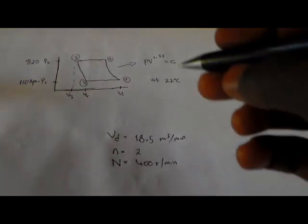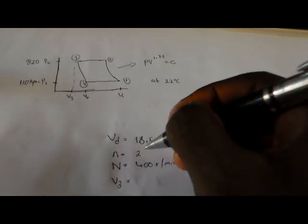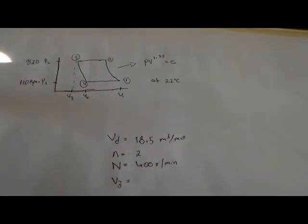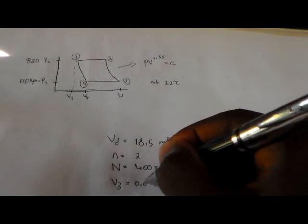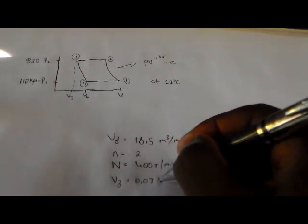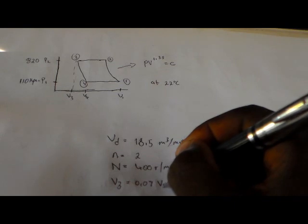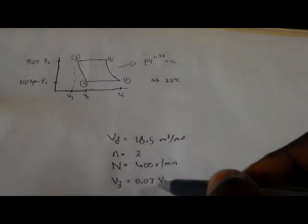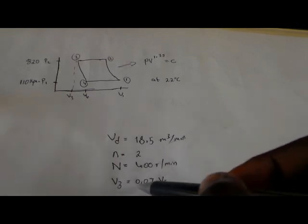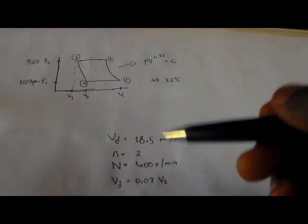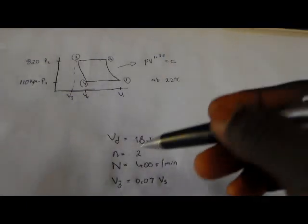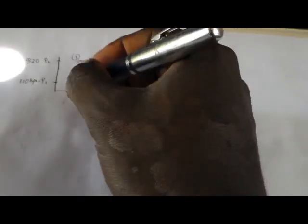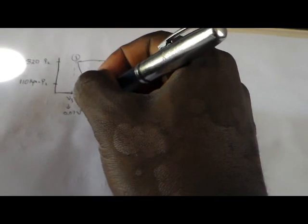The clearance volume, which is volume V3, is 7% of the stroke volume. That means 7 divided by 100, giving us 0.07 times the swept volume Vs. So the clearance volume V3 = 0.07·Vs.